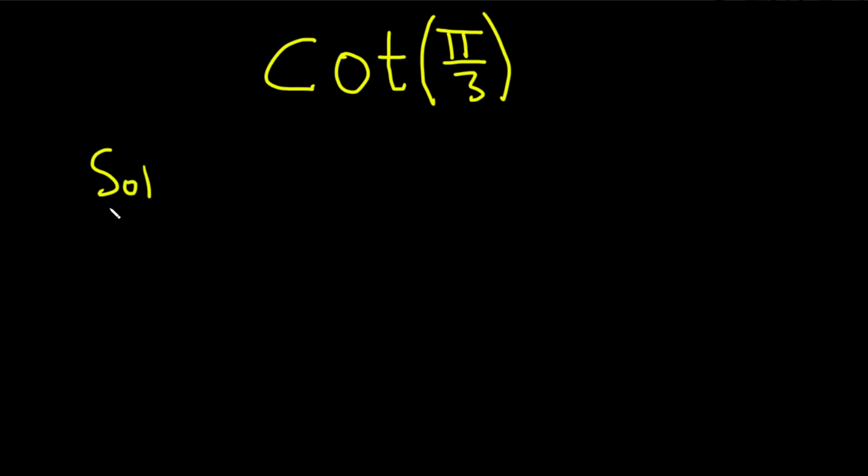Solution. So let's start by recalling a very important formula. The cotangent of x is equal to... Well, there's a couple of ways to think about it. You can think about it as cosine over sine or 1 over tangent. I'm just going to go with 1 over tangent. So 1 over the tangent of x.